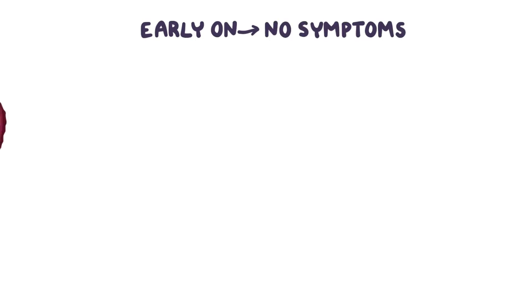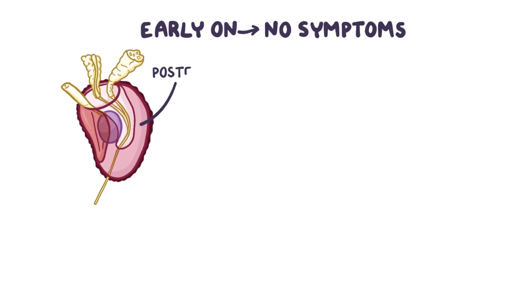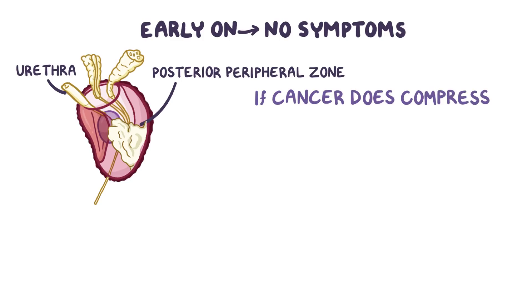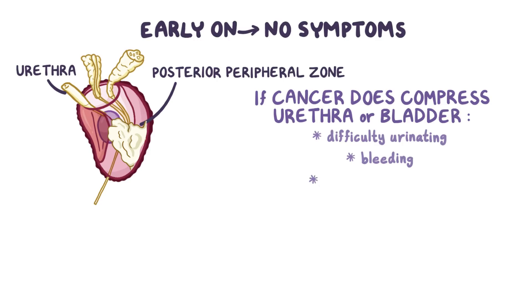Early on, prostate cancer typically causes no symptoms, and that's because the majority of prostate cancers arise in the posterior peripheral zone, which is far away from the urethra. As a result, these tumors can grow quite large before they cause problems with urination. Over time, if the cancer does compress or invade the urethra or bladder, it can cause difficulty urinating, bleeding, and pain with urination and ejaculation.